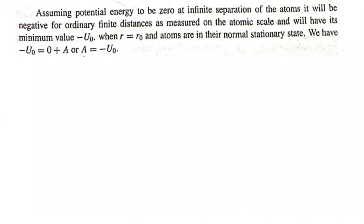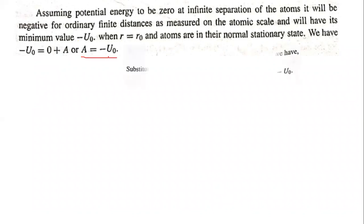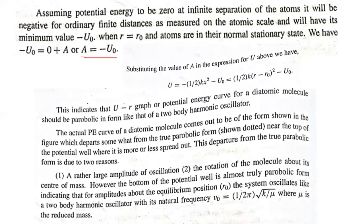Applying the initial condition, u is equal to half of k·x² minus u₀, which equals half of k into (r minus r₀) the whole square minus u₀. This indicates that the u-r graph, or potential energy curve, of a diatomic molecule should be parabolic in form, like the two-body harmonic oscillator.